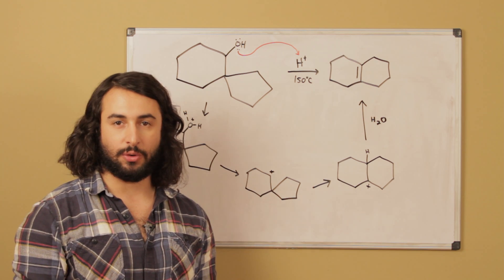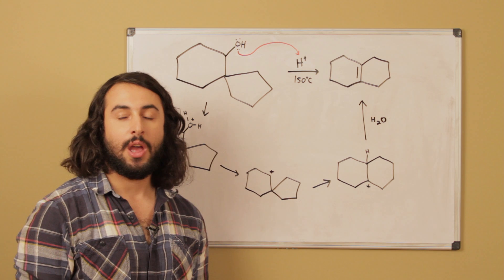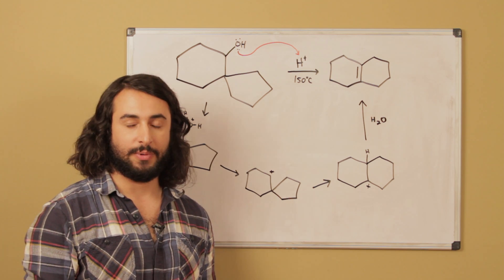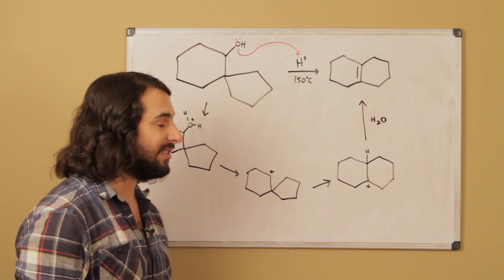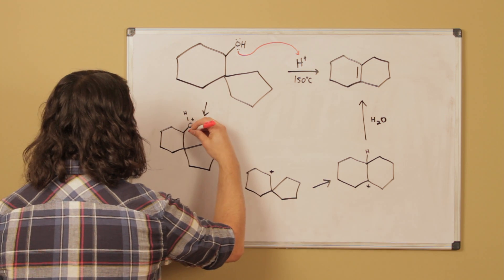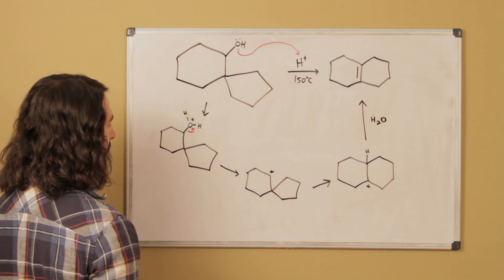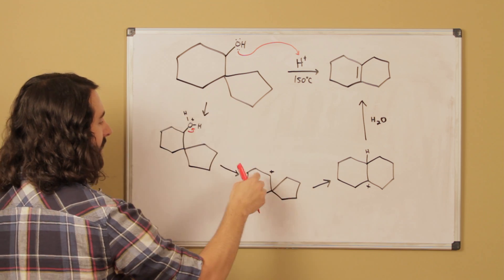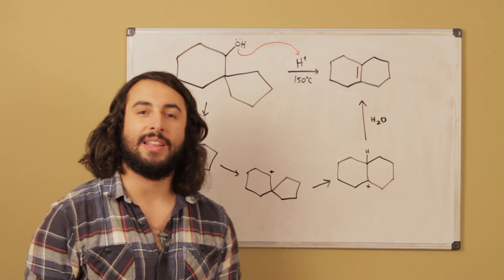Now whereas a hydroxide group is a terrible leaving group, a water molecule is a great leaving group and we are in acidic condition so positive charges are okay. So this water can leave. If that water leaves, now we're left with a carbocation right here.